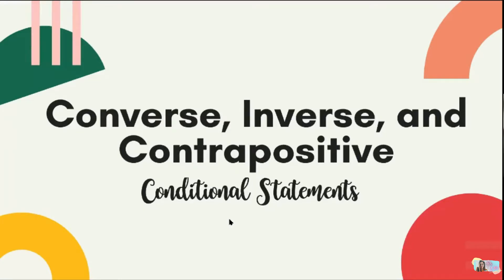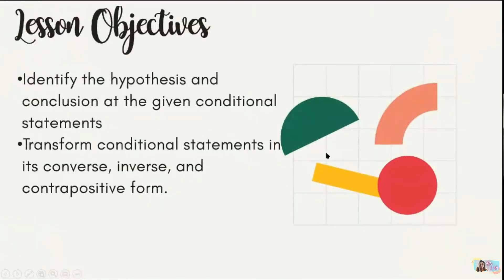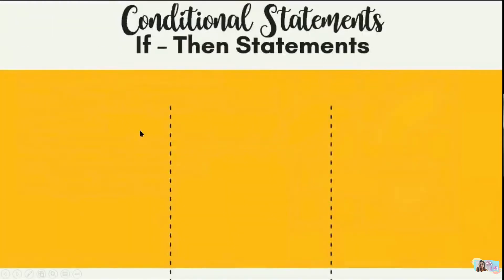Now today we move on to converse, inverse, and contrapositive. The if-then form is still there, but these are additional forms of it — and the meaning may also change. Our lesson objectives are: first, to identify the hypothesis and conclusion of given conditional statements; and second, to transform conditional statements into their converse, inverse, and contrapositive forms. To do this, we first need to know the hypothesis and conclusion, then determine what happens in each form.